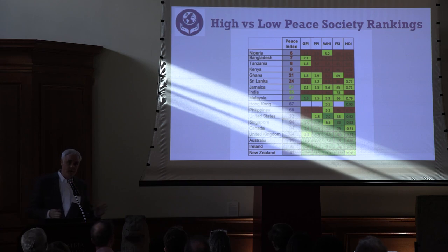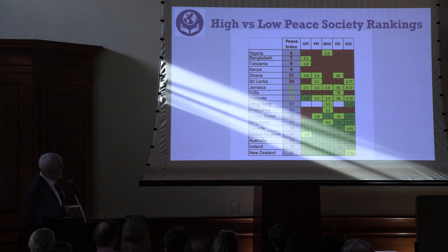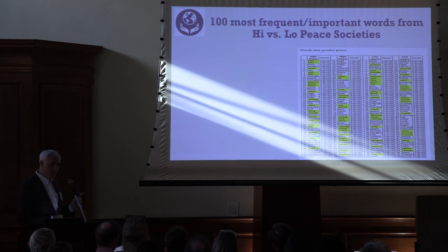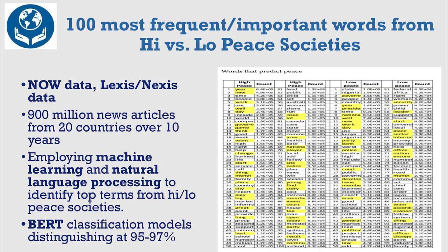Basically what we've done is use the existing peace indices — the top five indices — to rank the top and bottom in terms of peace around the world, and then we scrape data from them. We actually got access to 900 million articles through LexisNexis over the past 10 years, and it allows us to learn.